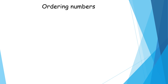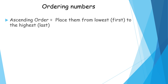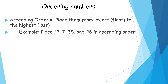What is ascending order? Ascending order lays them from lowest first to highest last. Example of ascending order: place number 12, number 7, number 35, and number 26 in ascending order. And the answer is number 7, number 12, number 26, and number 35. That's how we do it in ascending order.